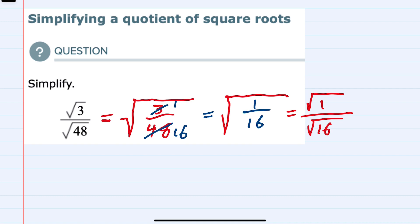both the top and the bottom here are perfect squares. So the square root of 1 is 1 and the square root of 16 is 4. So our simplified expression is just 1/4.